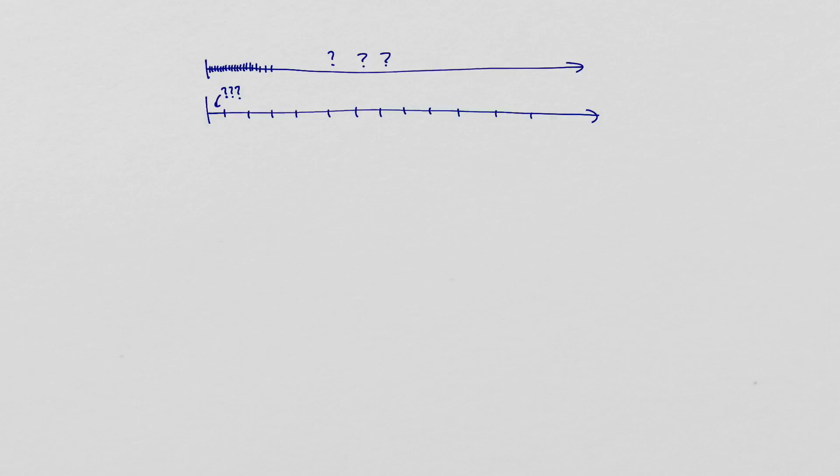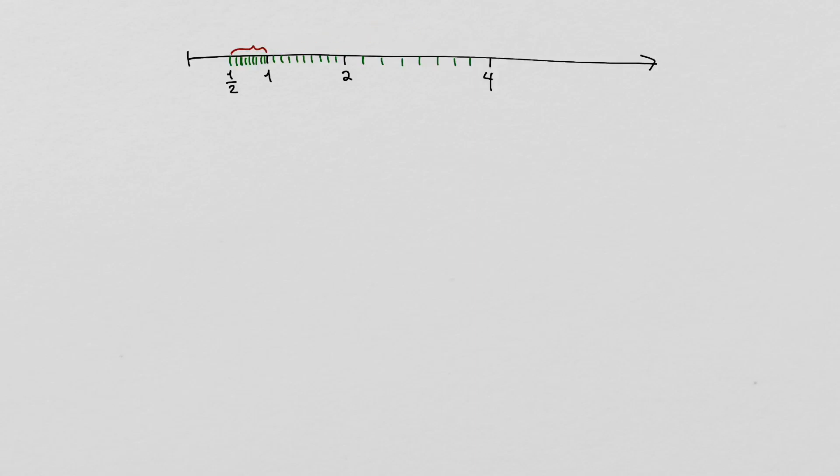First, let's dedicate one bit to indicating the sign of the number. Then we have 63 bits for each half of the number line. Let's put many equally spaced lines between 1 and 2, and then copy that setup to the interval between 2 and 4, between 4 and 8, and so on, and also between 1 half and 1, 1 fourth and 1 half, and so on.